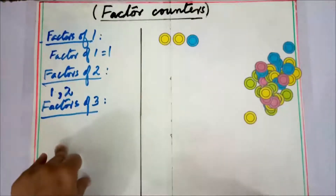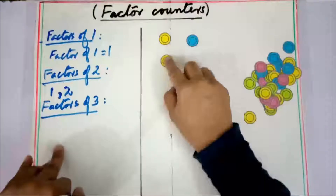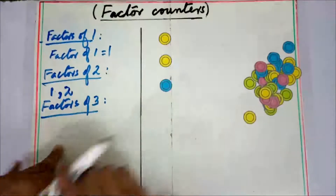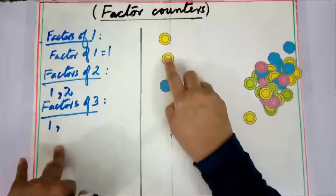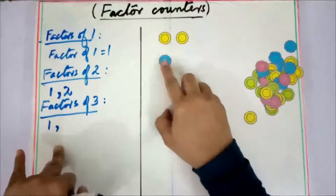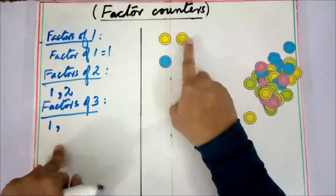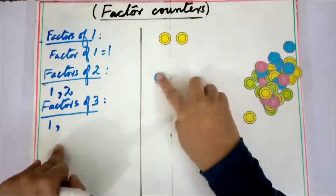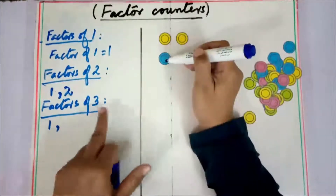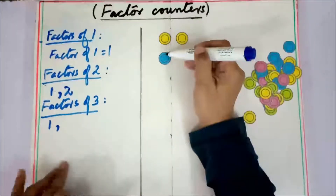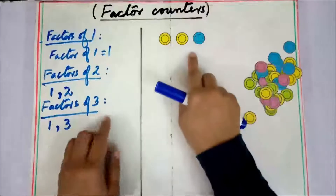Factors of three: first we make groups of one — one divides evenly into three, so one is a factor. Now can we divide into groups of two? No, because there is a remainder of one, so two is not a factor of three. But we can make a group of three — three divides evenly into three, so three is a factor.